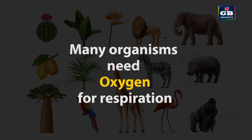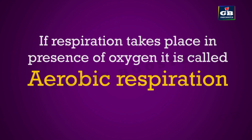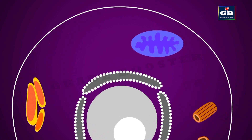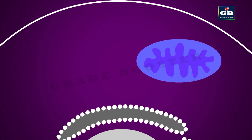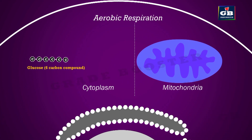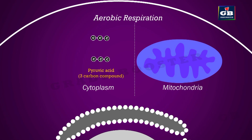In some organisms, oxygen is needed for the process of respiration. The respiration that takes place in the presence of oxygen is called aerobic respiration. In aerobic respiration, one glucose molecule splits into two pyruvic acid molecules. This step takes place in the cytoplasm of the cell.